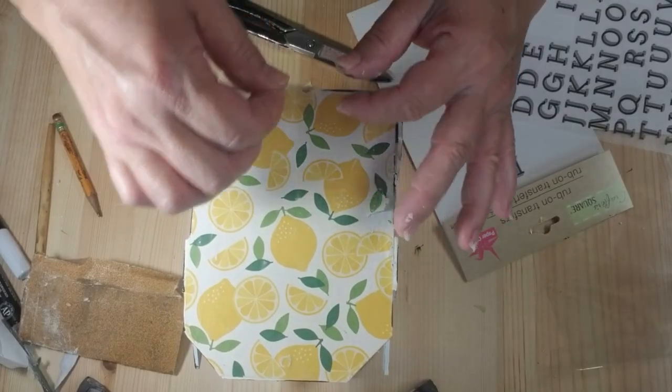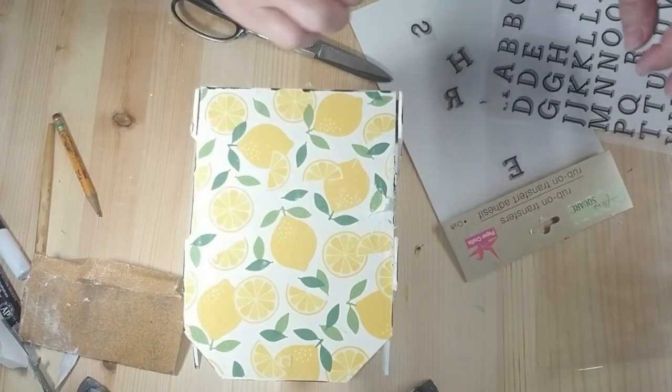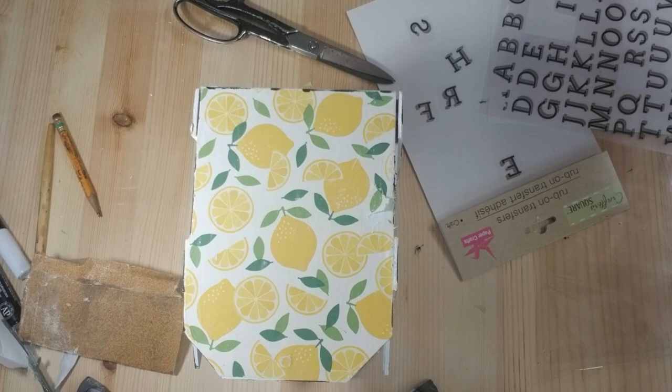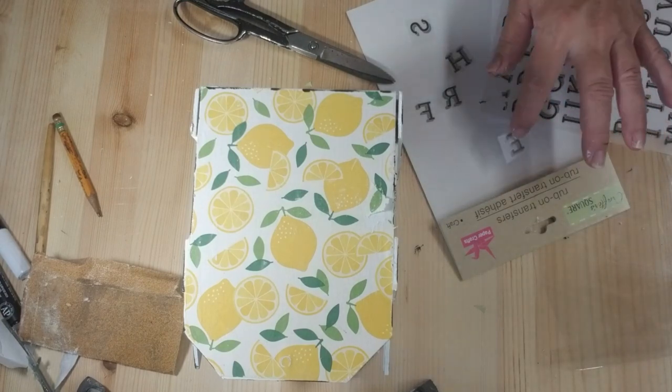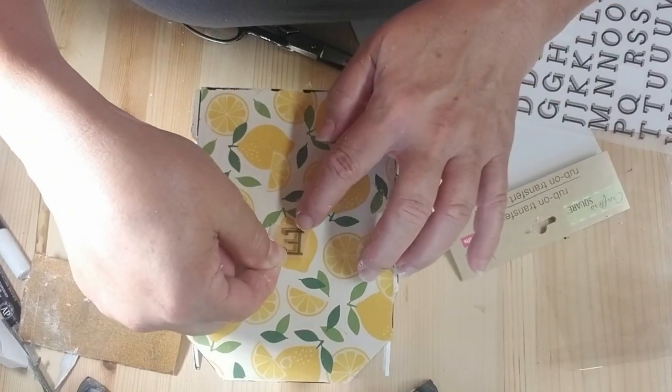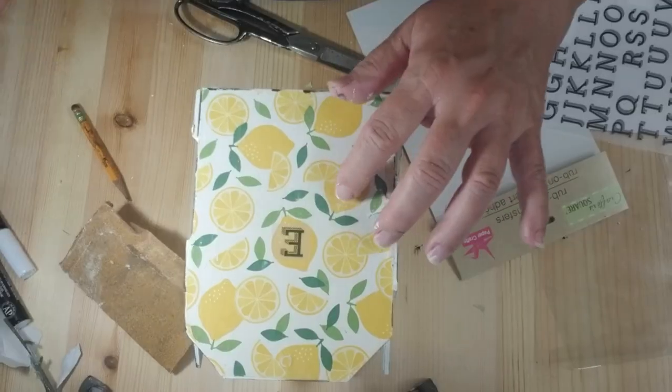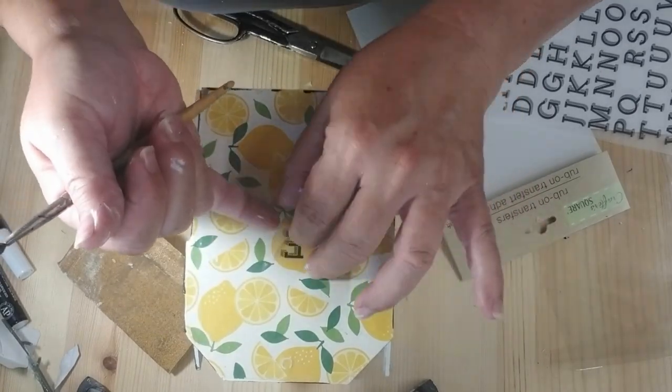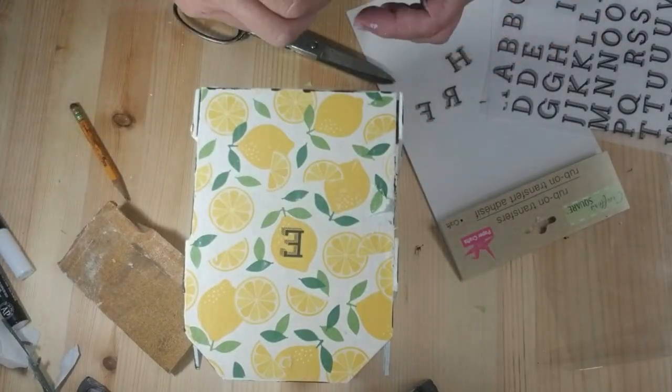I've got these rub-on transfers that come from the Dollar Tree. So I'm going to put the words fresh lemons on one side of this box. Now putting these on is super easy. You just cut out the letter, place it down, and then you need to just burnish it with some type of tool, either a little scraper. I just ended up using the bottom side of the paint brush and it worked really well.